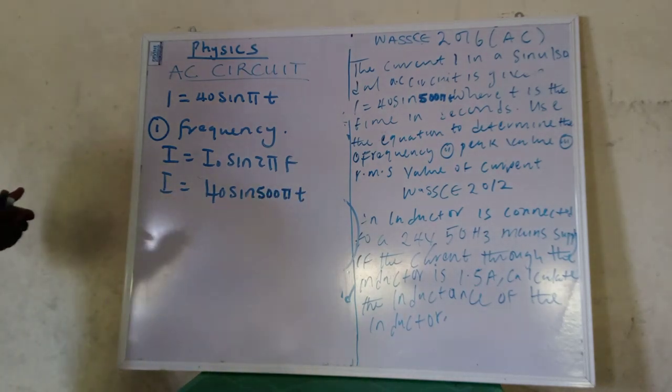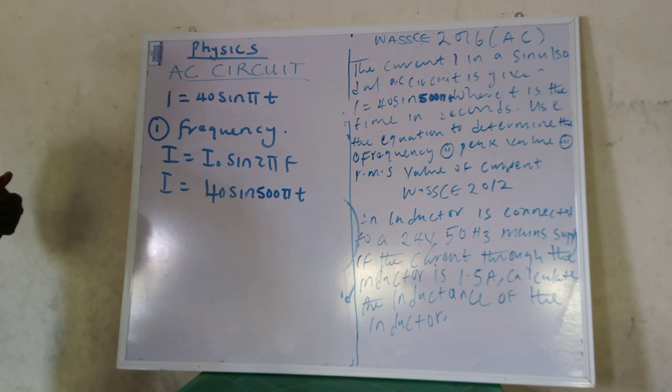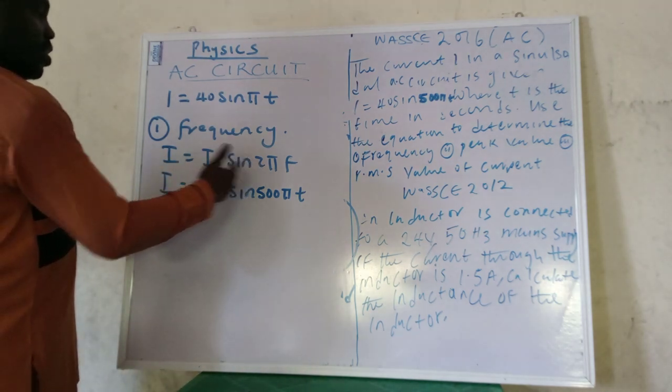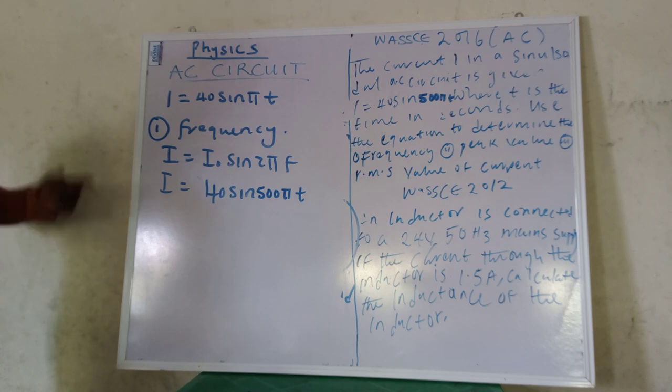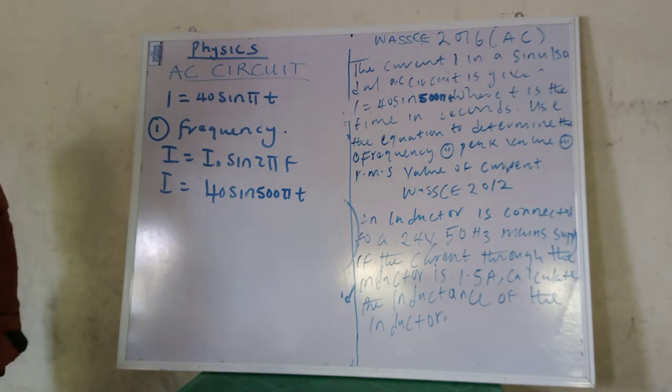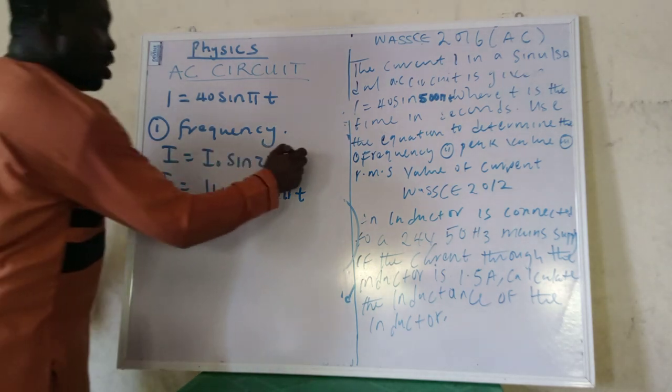So this is what we have, 500πt. Now looking at this question, we have this. Can someone tell me now how do we make comparison to solve our frequency? Go ahead. Remember this one has t here in our formula.